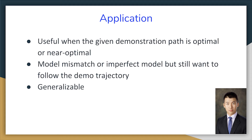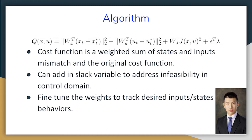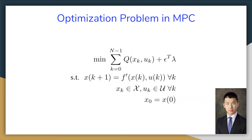We want to follow the demo trajectory very closely given these model mismatches, so that after we have this algorithm, the MPC following is going to be very generalizable. Here's the algorithm. We have a cost function q of x and u, where x is the state and u is the action or input. This is essentially a weighted sum of states and inputs mismatch and the original cost function. We can add slack variables to address the infeasibility issues in the control domain, and also fine-tune the weights to track the desired inputs and states behaviors. In MPC, we are iteratively solving the optimization problem.